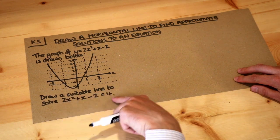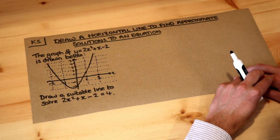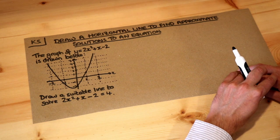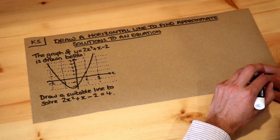Now if we're trying to solve this equation here, we want to solve 2x squared plus x minus 2 equals 4, you might already know a variety of techniques to solve it.